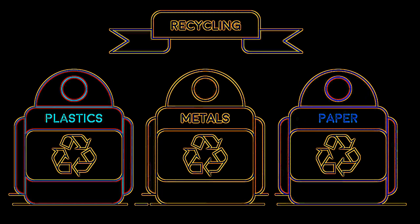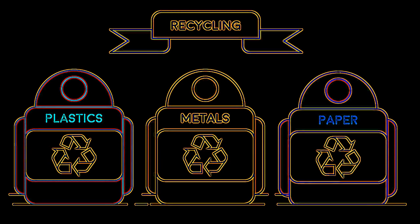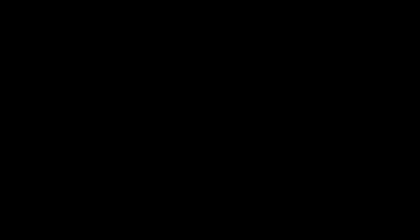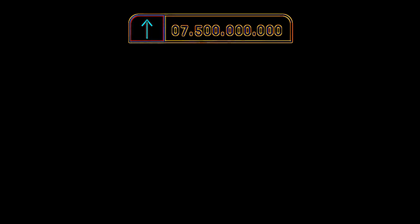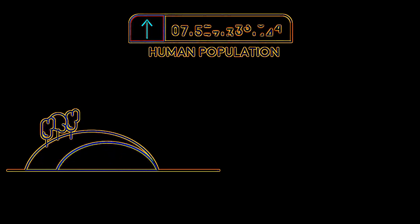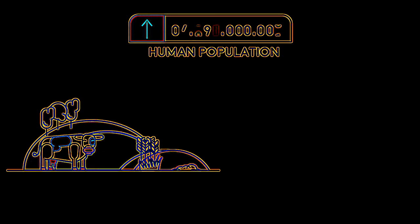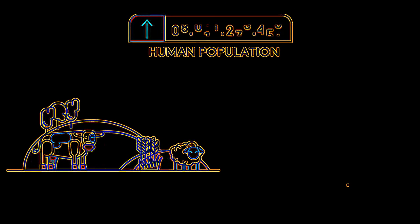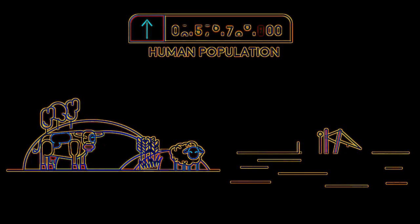Another sustainable life choice is recycling. Recycling plastics, metals, and paper means that fewer resources need to be extracted from the earth, as we can reuse the already extracted products, meaning more resources for future generations.